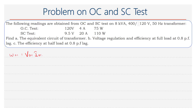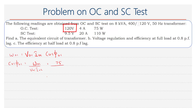We know that Woc is equal to Voc into Ioc into cos φoc. Rewriting the equation, cos φoc is equal to Woc divided by Voc into Ioc. Substituting the values: Woc as 75 watts, Voc as 120, and Ioc as 4, we get cos φoc equal to 0.1562.